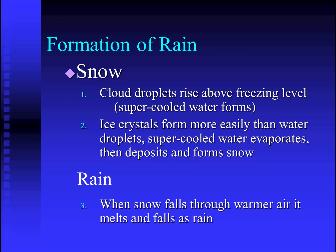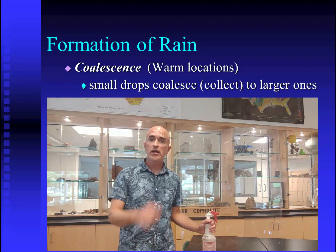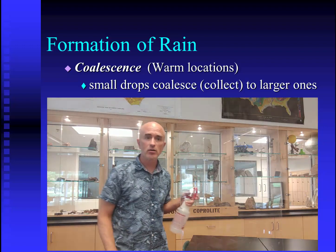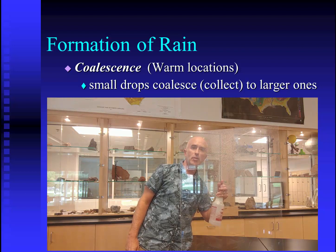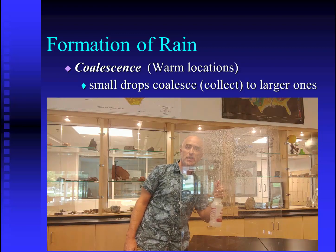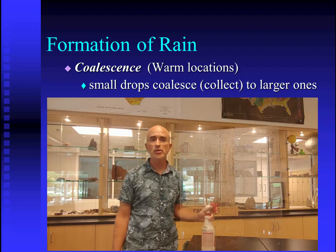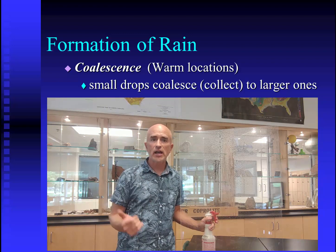But what about rain? When the snow falls through warmer air, it melts and falls as rain. Coalescence is a process for rain formation in warm locations. I can easily demonstrate that with this plexiglass and a spray bottle. Watch what happens when I begin to spray little tiny droplets of water on this plexiglass — the small droplets collect or coalesce together. They gradually build in size until they get big enough that gravity makes them slide down the glass. A very similar thing happens in the atmosphere: tiny drops gather in size until they're big enough that they actually fall.